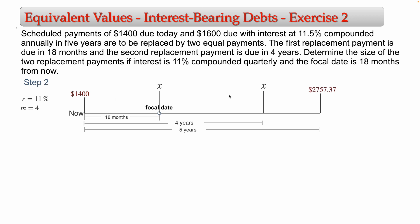For the 1,400 due today, I need to find its value at the focal date by going to the future. There are 18 months between now and the focal date. 18 months is 1.5 years × 4 periods per year = 6 periods. Alternatively, 18 months ÷ 3 months per quarter = 6. So n = 6 for the 1,400.